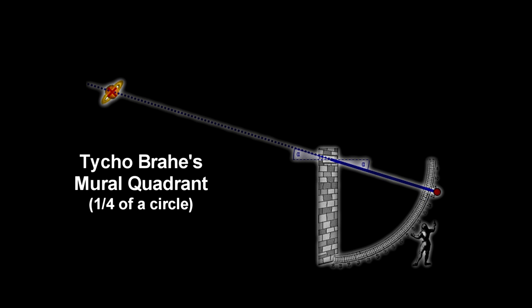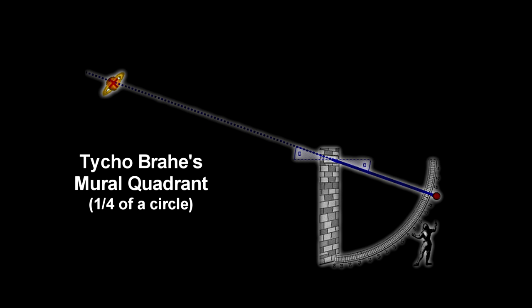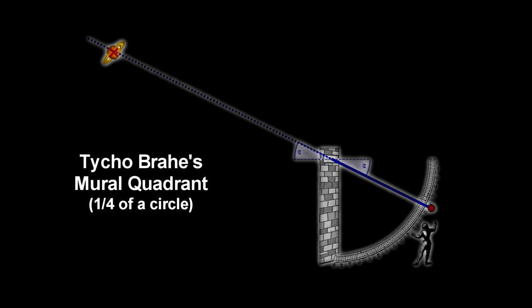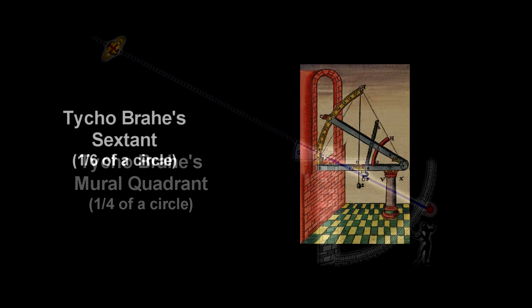Tycho Brahe, with mural quadrants, sextants, and his naked eye, used parallax measurements to find distances to the planets. He focused on Mars and tabulated volumes of data on a daily basis.